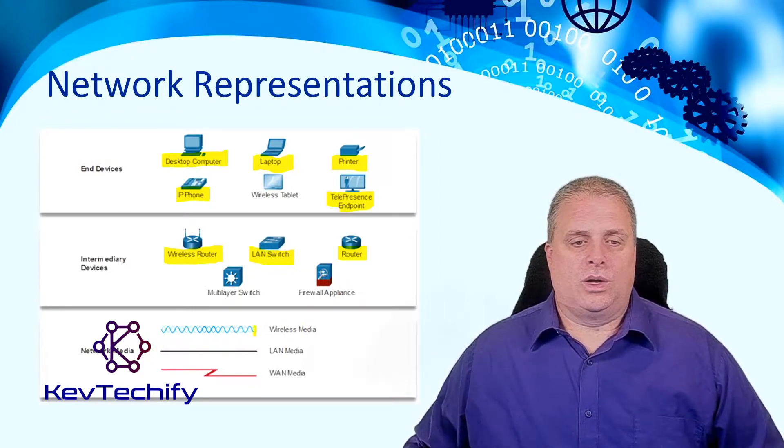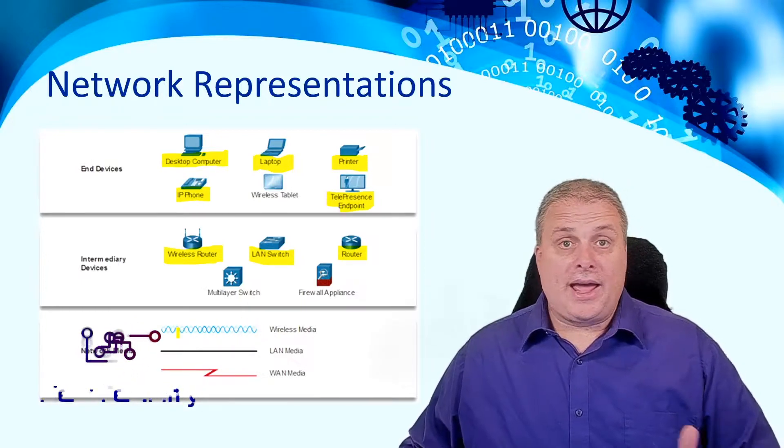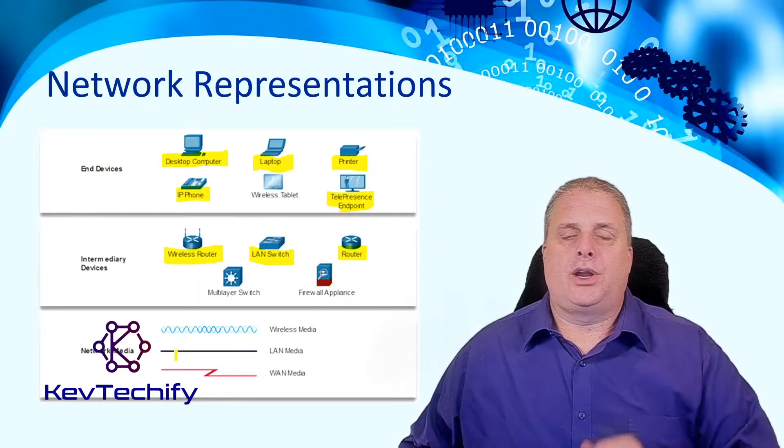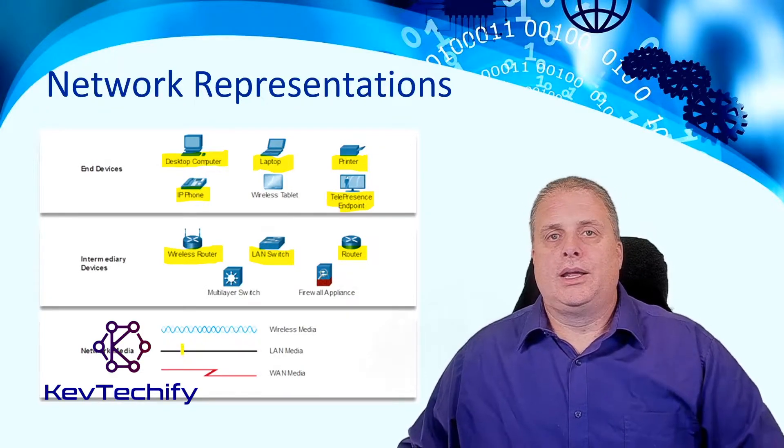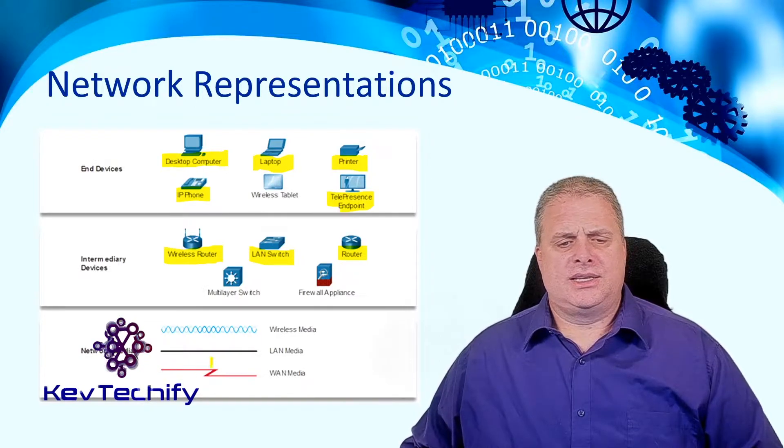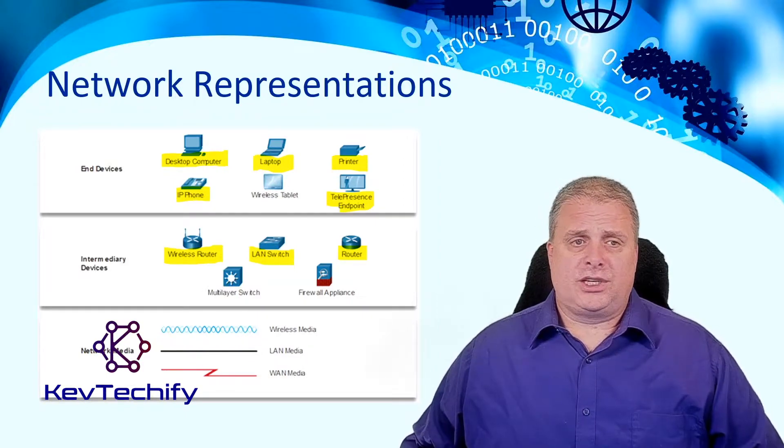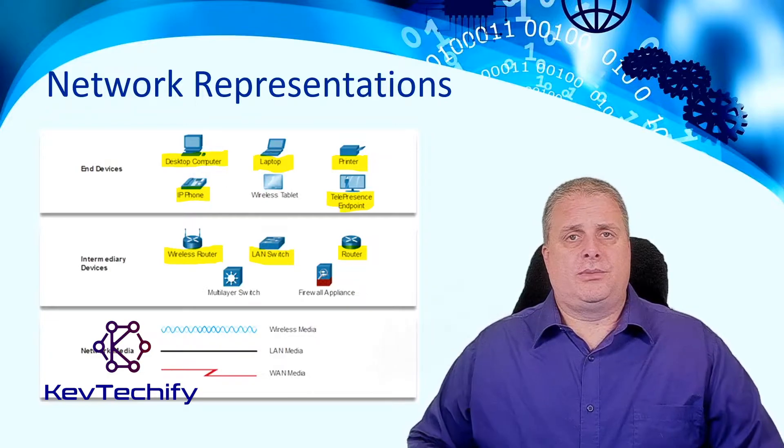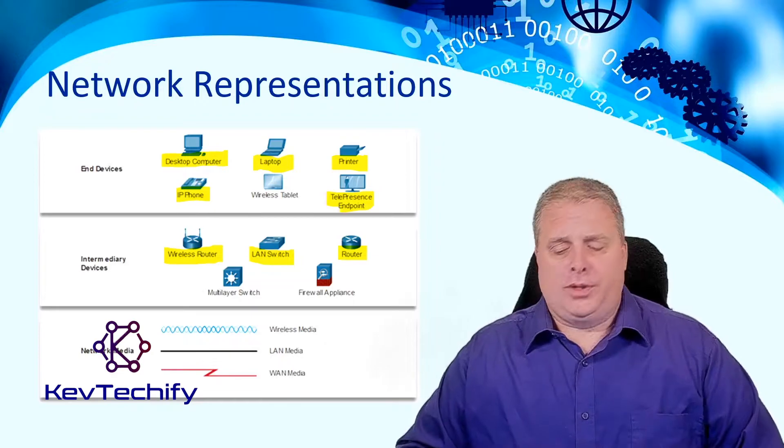We have our network media. Once again, wireless media here. What that is, is the radio signals going through the air. LAN. Notice it's a straight black line. That's typically what we identify as a local area network. This is that Ethernet copper. Down here, this is a WAN connection. I typically refer to it as a red lightning bolt. Different terminology. You'll need to go in and probably memorize some of these. But, as we work through this and through these episodes, you'll be more and more familiar with them.